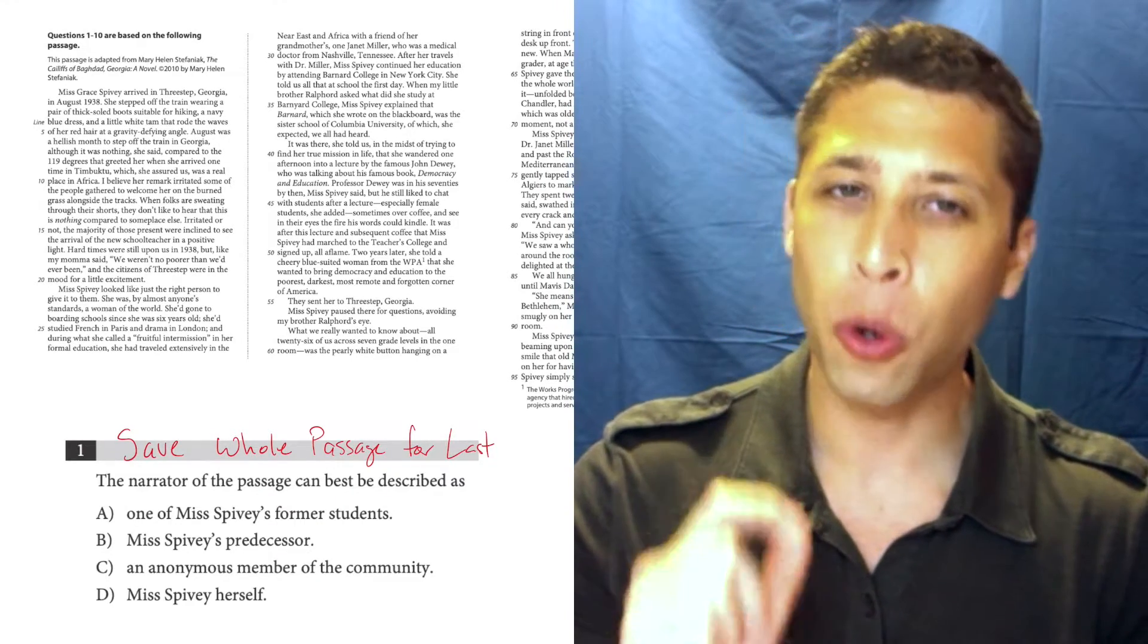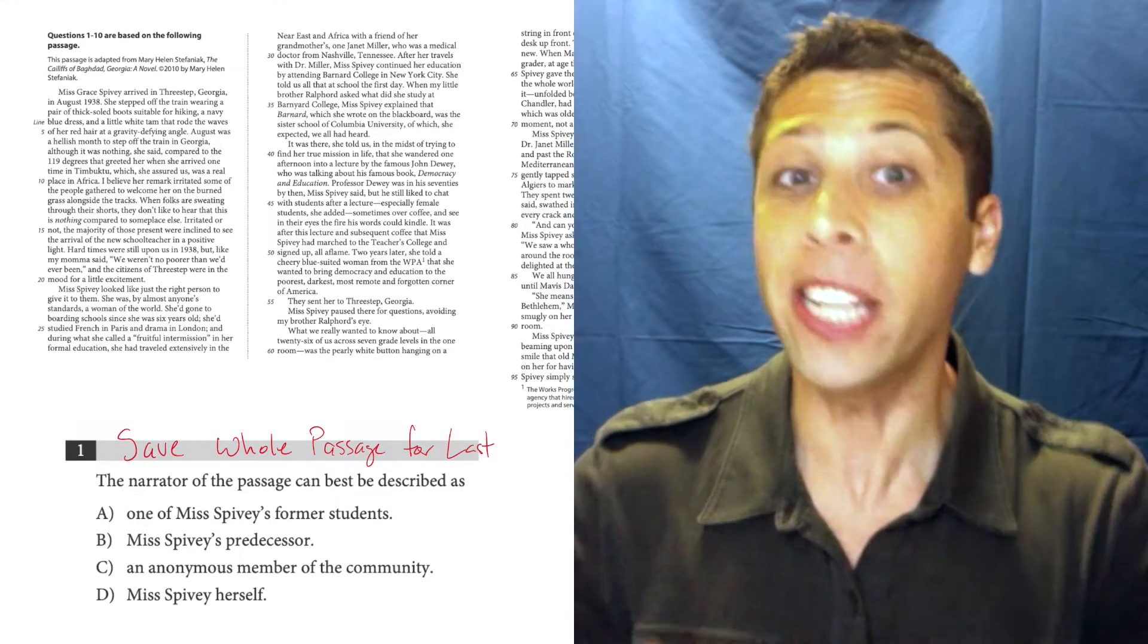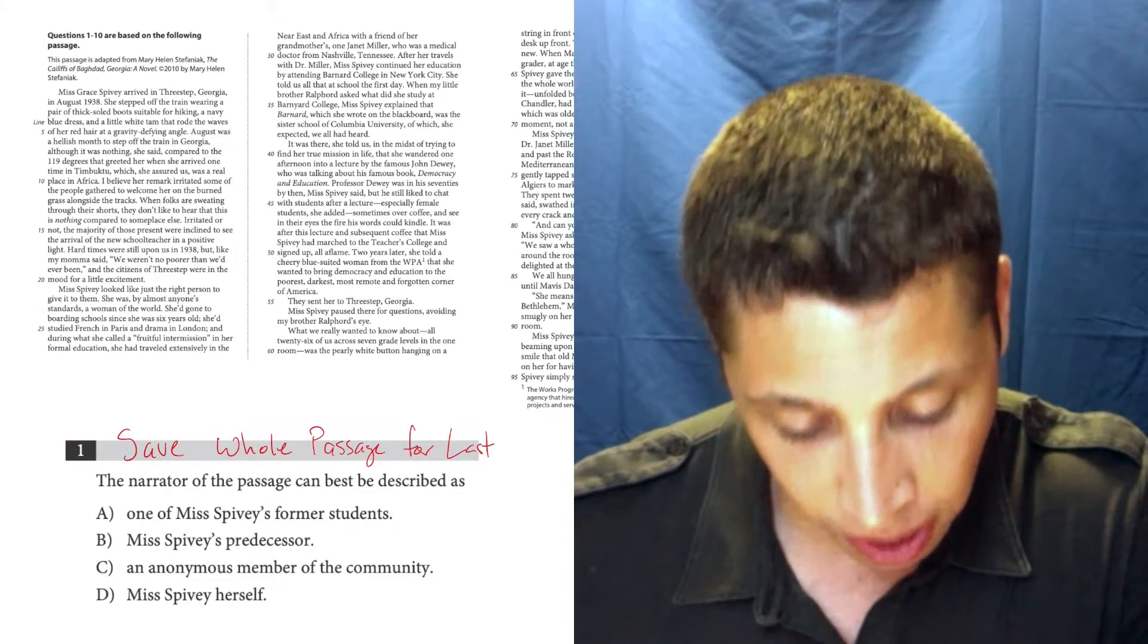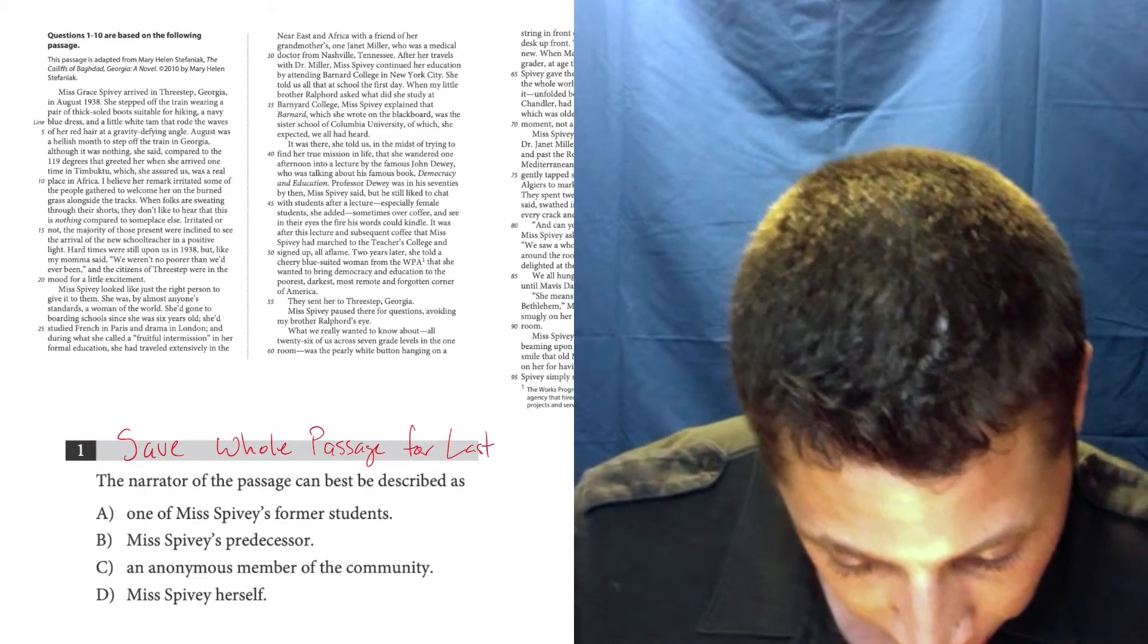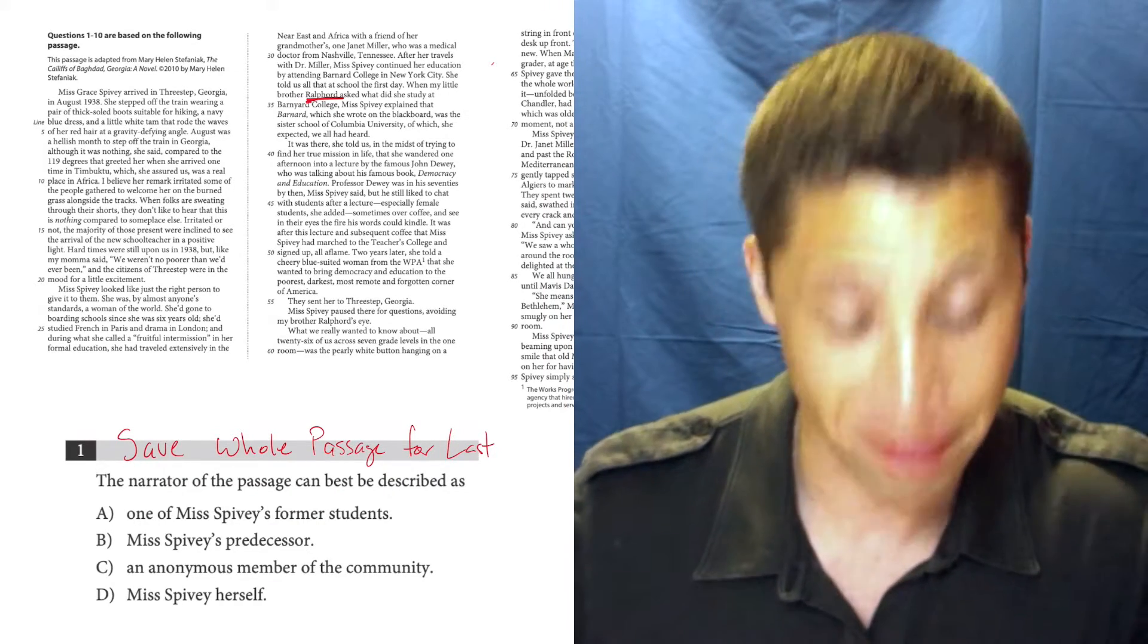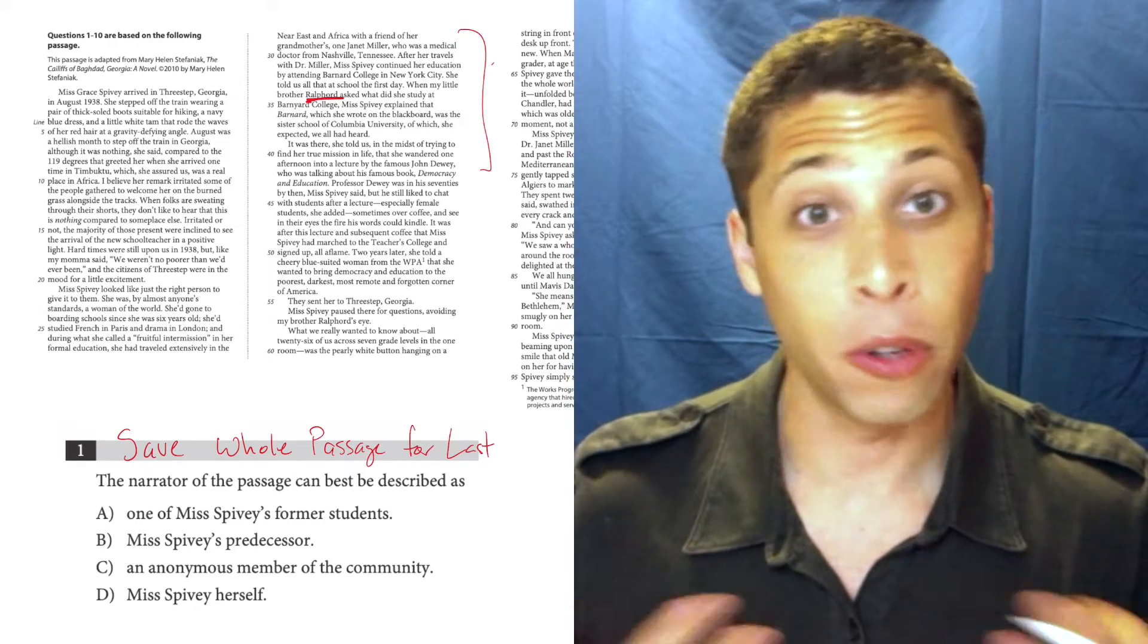But also there are certain questions that direct us to lines that really make it clear. So question number seven in particular, six and seven, direct us to this area about Barnard and Ralford, whatever kind of name that is. And so when we read that, we get a really clear sense of who is talking here.